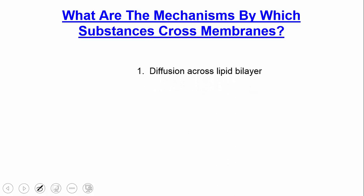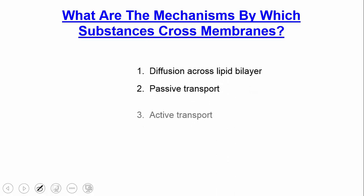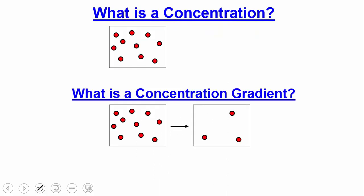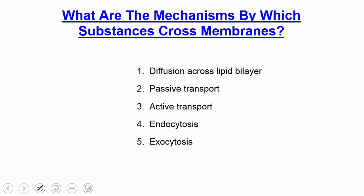What are the mechanisms by which substances cross membranes? There are five we'll talk about today: diffusion, passive transport, active transport, endocytosis, and exocytosis.